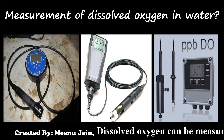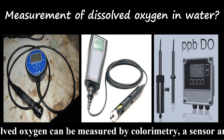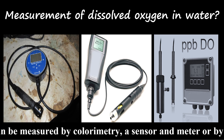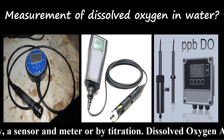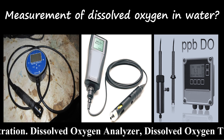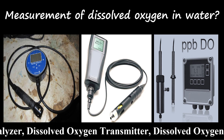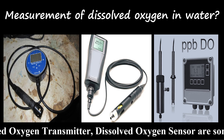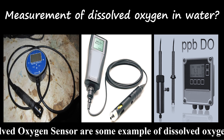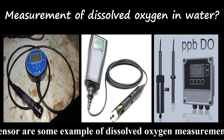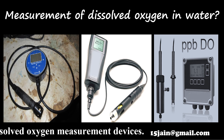Dissolved oxygen can be measured by colorimetry, a sensor and meter, or by titration. Dissolved oxygen analyzers, dissolved oxygen transmitters, and dissolved oxygen sensors are some examples of dissolved oxygen measurement devices.